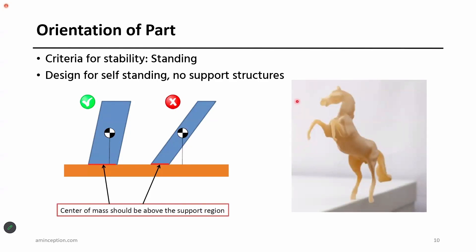Can you print a part that can self-support? If you want to produce a part and are placing it on two legs, while printing, can it self-stand? Where does the center of gravity lie? Does it lie on the same line of support? If not, the part may not be able to self-stand. You have to find the right orientation, otherwise, after printing a certain height, it may collapse, wasting material and build time.